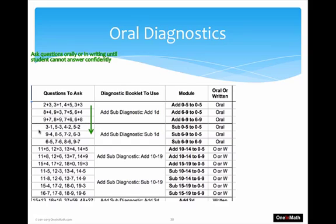Let's say your child has a problem with 9 minus 4. You go over here to the diagnostic booklets, which are the written part of the diagnostic. These are basically to figure out which module for them to start on. This diagnostic packet is split into three different modules: Sub 0–5 to 0–5, Sub 6–9 to 0–5, and Sub 6–9 to 6–9. In other words, it's basically one-digit subtraction, and it's very basic.